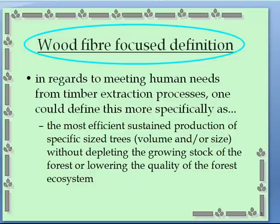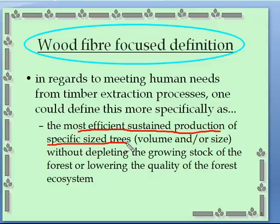It's the most efficient way of getting wood out from the stands — forest stands — of specific sized trees. That does not just mean a big tree; it could mean trees that have lots of volume. A lot of black spruce are small but they provide a lot of volume for the pulping industry. Or it could be a specific size — for example, white pine of a certain size to provide dimensional lumber, flooring, siding, and so on.